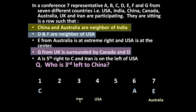USA is at the centre and this is the left side of USA — that is Iran. Now let us go back to the underlined statement: China and Australia are neighbours of India. Australia's position was already fixed at extreme right. So Australia is here, China is on one side of India, and India is in the middle — their positions are now fixed.